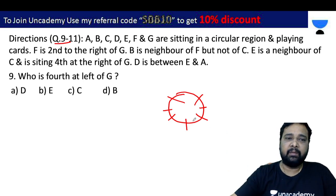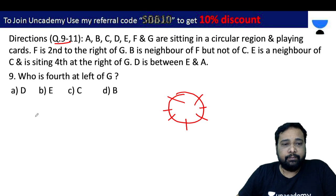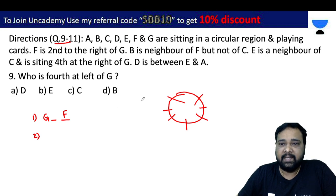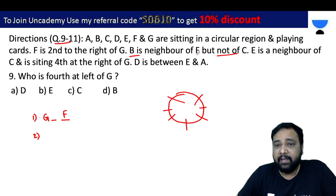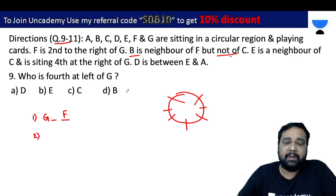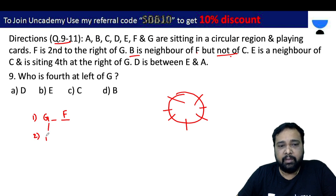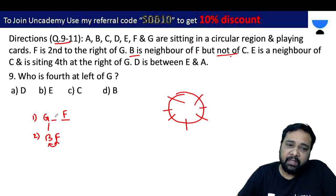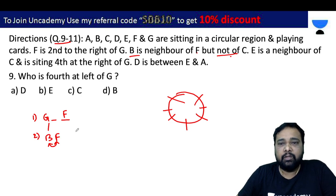F is second to the right of G. So on G's right side, the second position is F. B is the neighbor of F, but not C. B is adjacent to F on the other side.